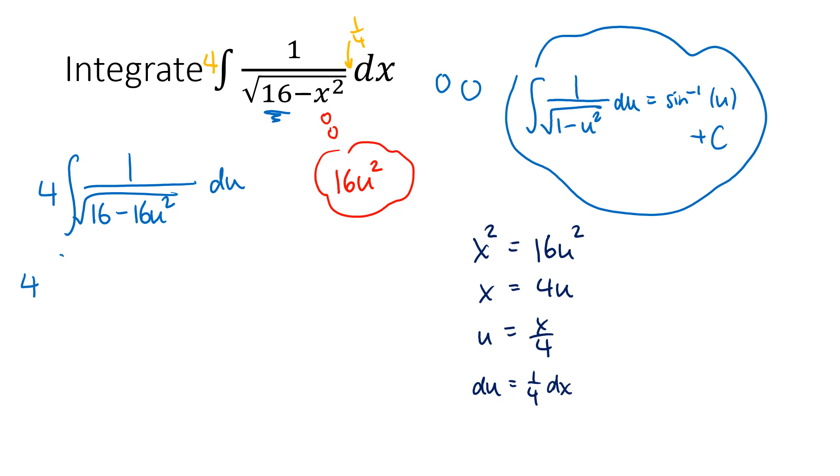So now just like we said, we're going to factor the 16 out of the bottom. So that gives us the square root of 16 multiplied by the square root of 1 minus u squared. Now the square root of 16 is 4, so the square root of 16 and this 4 divide out. And that gives us exactly what we were hoping for, which is 1 over the square root of 1 minus u squared du, which is the inverse sine of u plus c.